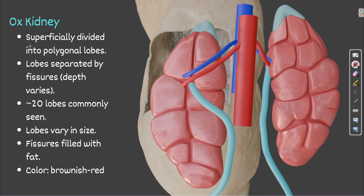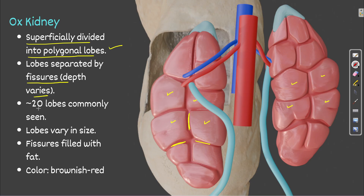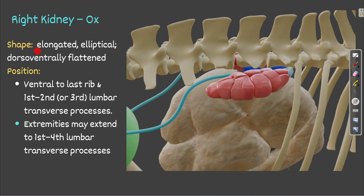The ox kidney is superficially divided into polygonal lobes, as you can see clearly here. The lobes are separated by fissures of varying depth. Normally, each kidney has about 20 lobes which vary in size, and the fissures are filled with fat — you will find fat deposition within these fissures.